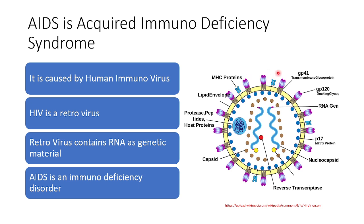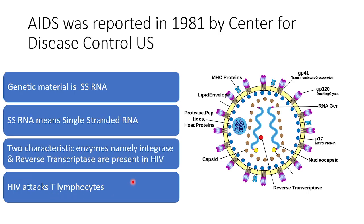This is the image of human immunovirus. HIV is a retrovirus, which means it contains RNA as genetic material. AIDS is an immunodeficiency disorder. AIDS was first reported in 1981 by the Center for Disease Control, United States.